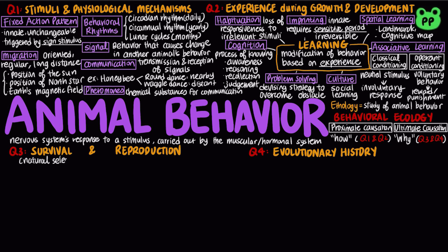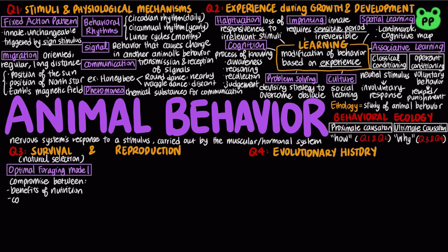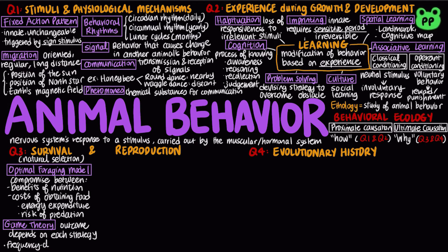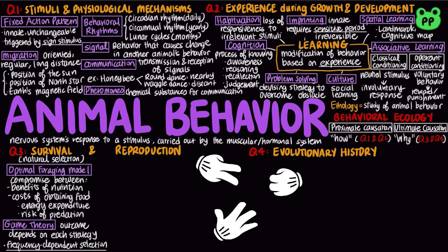Genetic components of behavior evolve through natural selection. The optimal foraging model views foraging behavior as a compromise between the benefits of nutrition and the cost of obtaining food, which includes energy expenditure and the risk of being eaten while foraging. Natural selection should favor foraging behavior that minimizes cost and maximizes benefit. Game theory evaluates alternative strategies where the outcome depends on each individual's strategy and the strategies of others — like rock, paper, scissors, each strategy will outcompete one strategy but be outcompeted by another, driving frequency-dependent selection.